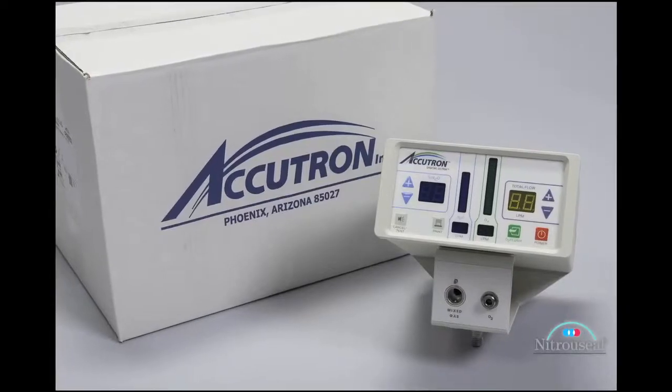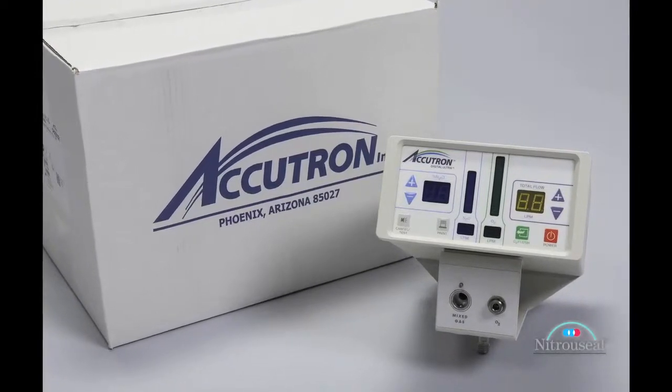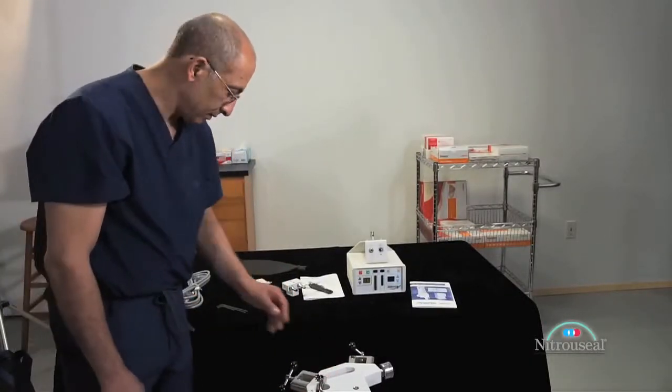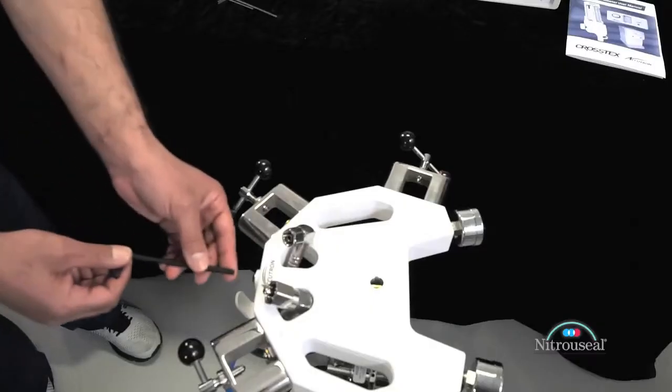Unpack the largest box marked Accutron carefully, checking to see that all the equipment is included and undamaged. Remove the flow meter from its separate smaller container. Place the mobile stand upright. You are now ready to attach the flow meter to the top of the stand.